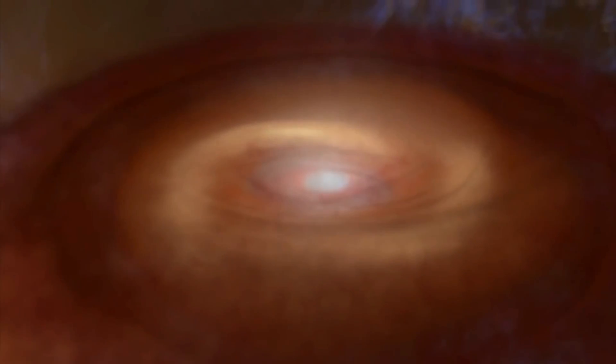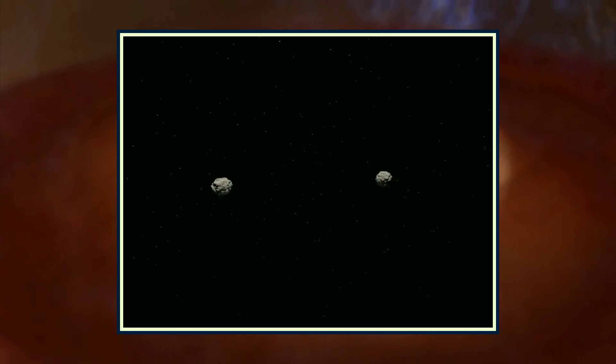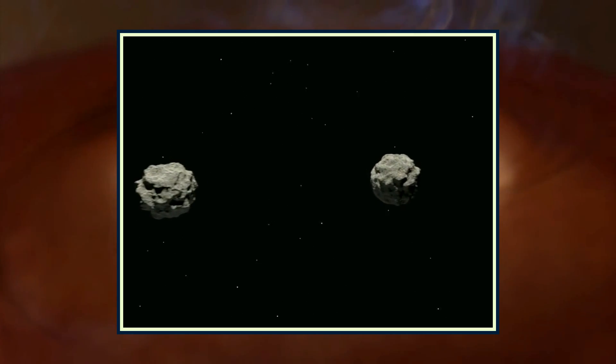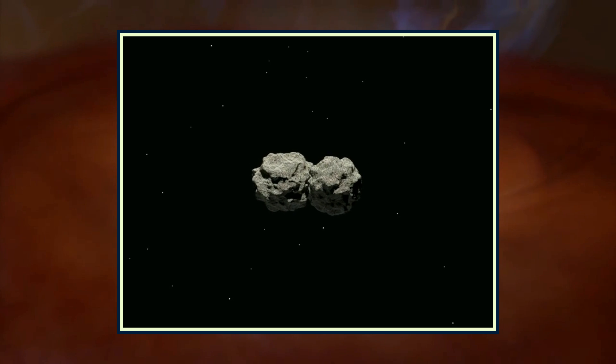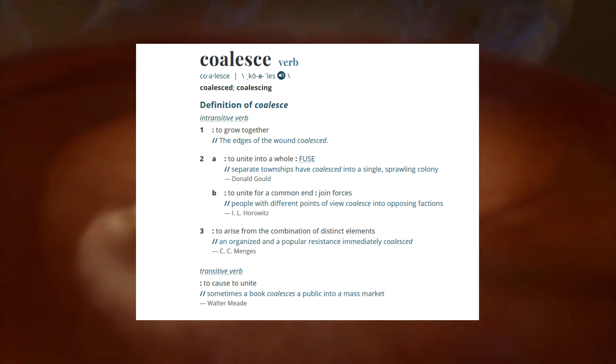After a while, this ring started to undergo a process called accretion. This is where the particles within the ring stick together via gravity and get bigger and bigger over time. The scientific verb for this is to coalesce.